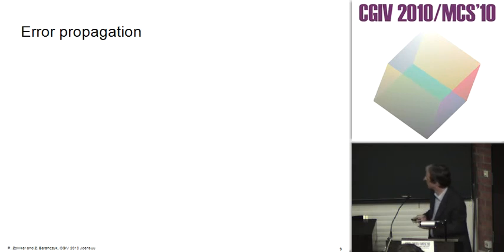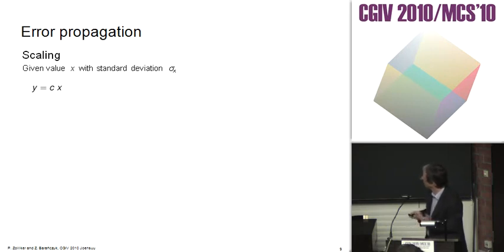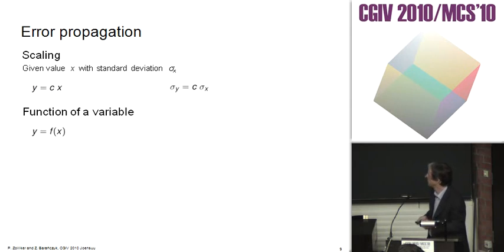Now we go to the error estimation part. I introduce three important laws of error propagation. If you have a value X with standard deviation sigma_X and we scale the value, the standard deviation is also scaled by C. If I have a function of a variable, then sigma is scaled by the derivative of this function, where we assume higher derivatives can be neglected.